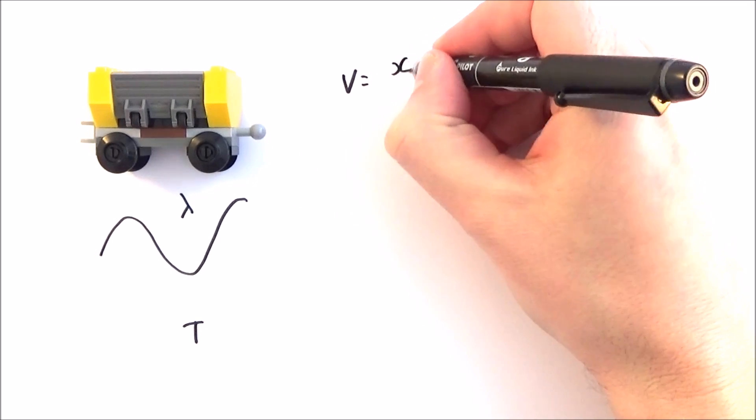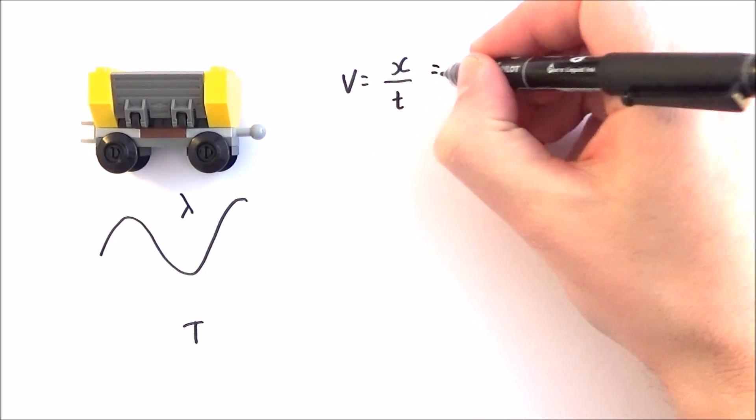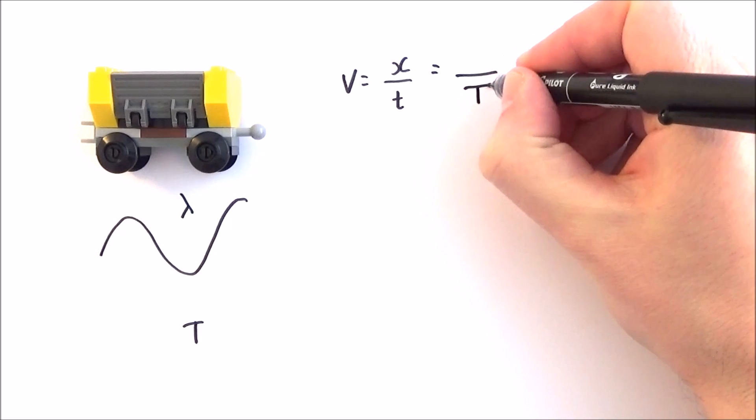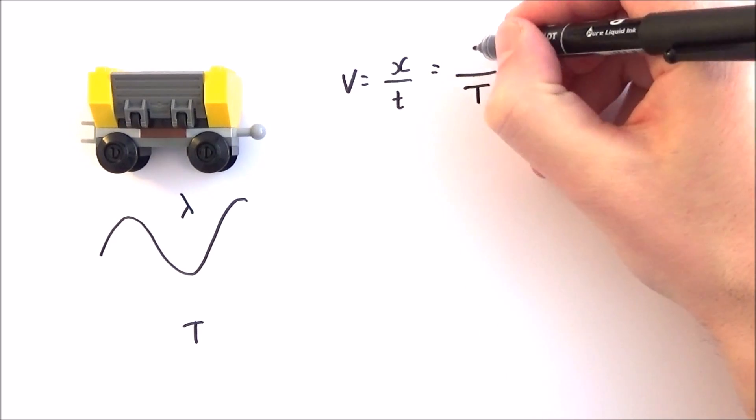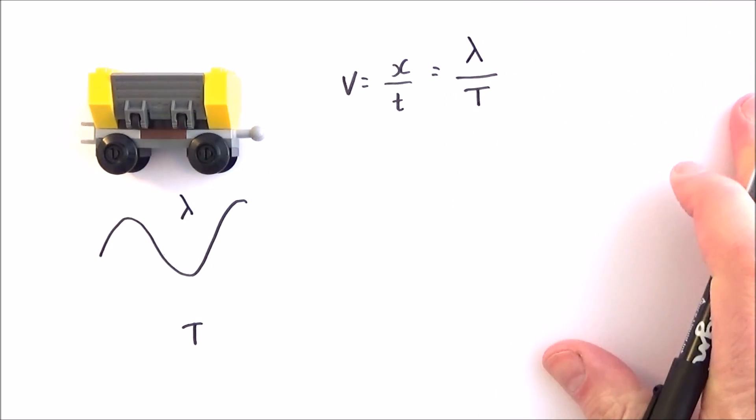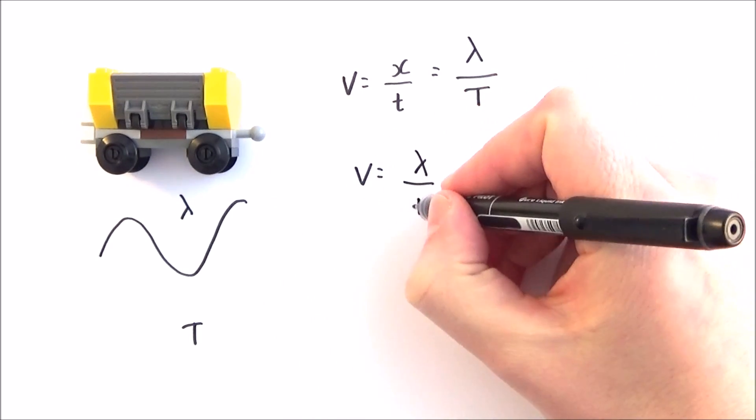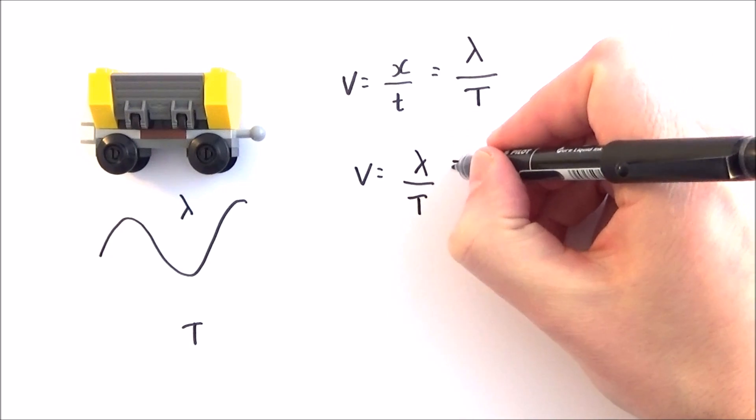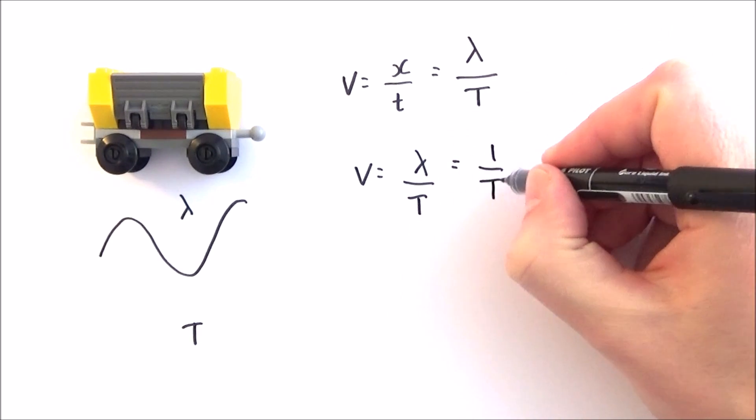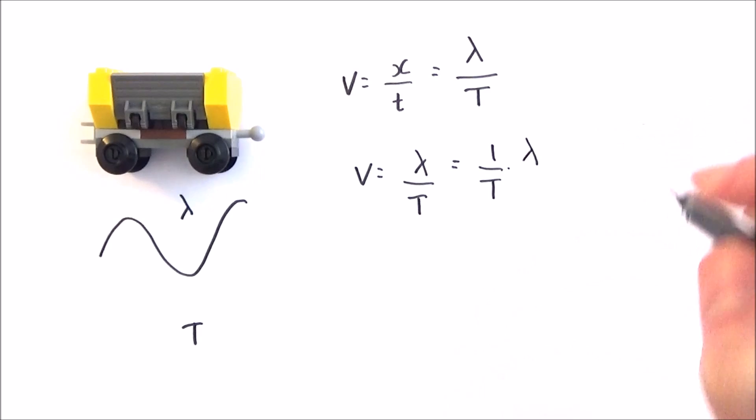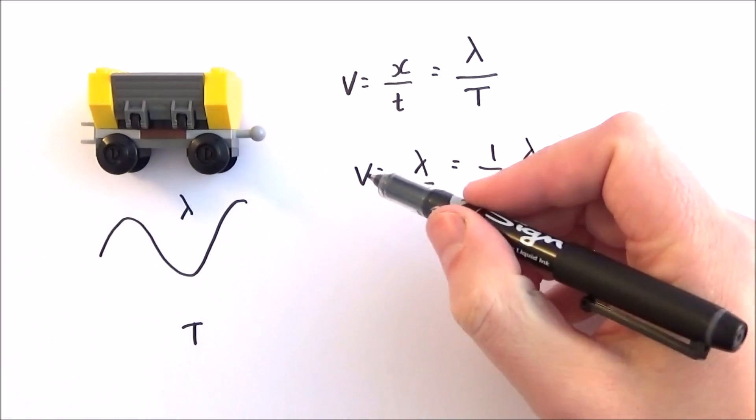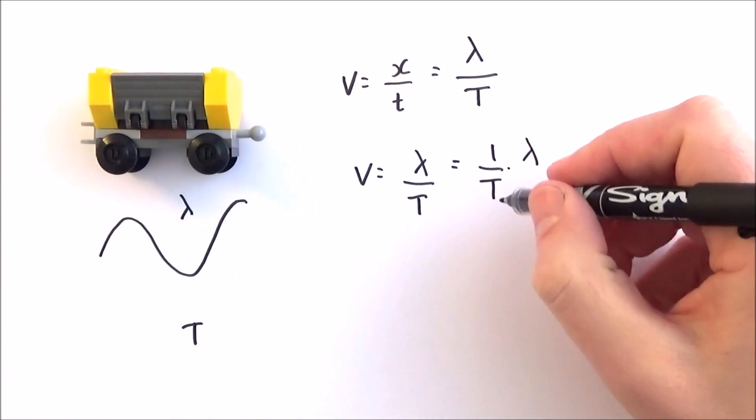Before we said v equals x over t, but in one time period capital T, one wavelength of a wave goes past. So we can then say that v is equal to lambda over T. We can also write this as one over T times lambda, so the velocity equals one over T times lambda.